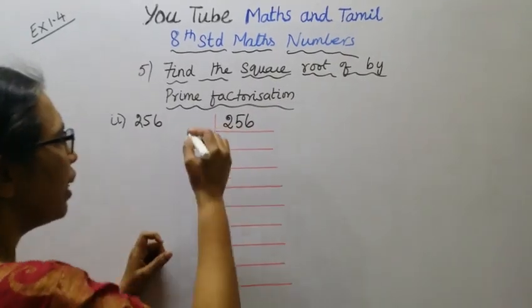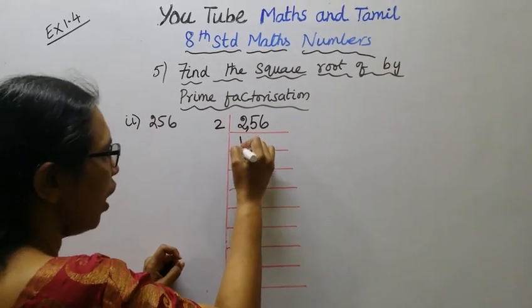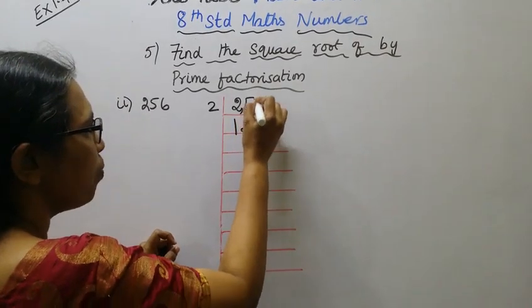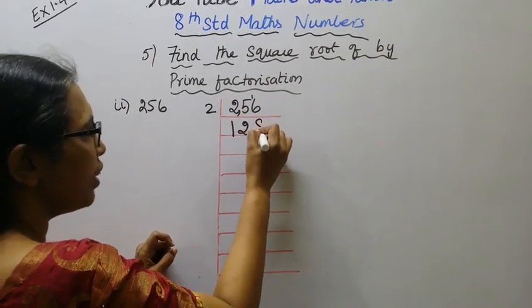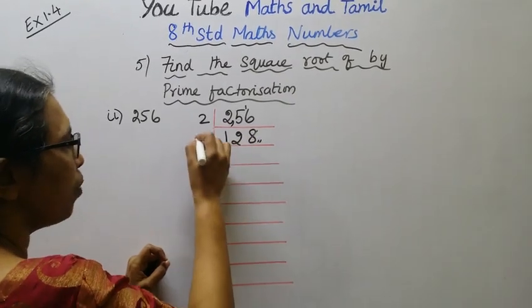Starting with 256, divide by 2. 2 into 256 is 128. Divide by 2 again, 2 into 128 is 64. Again divide by 2, 2 into 64 is 32.